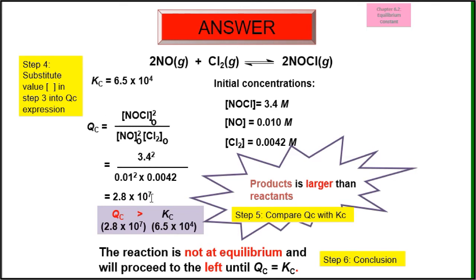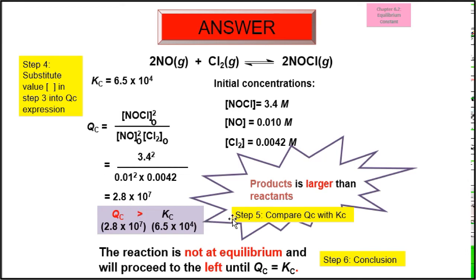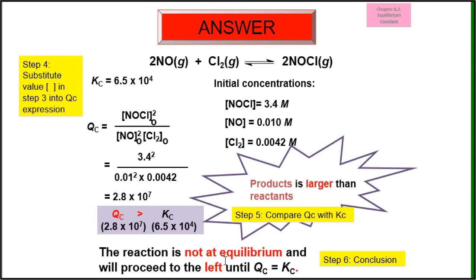Step 4: substitute the concentration values from step 3 into the Qc expression and calculate. Step 5: compare Qc with Kc. In this case, Qc is larger than Kc, meaning the reaction is not at equilibrium. The system will shift to the left because the product concentration is greater than the reactant concentration, until Qc equals Kc.